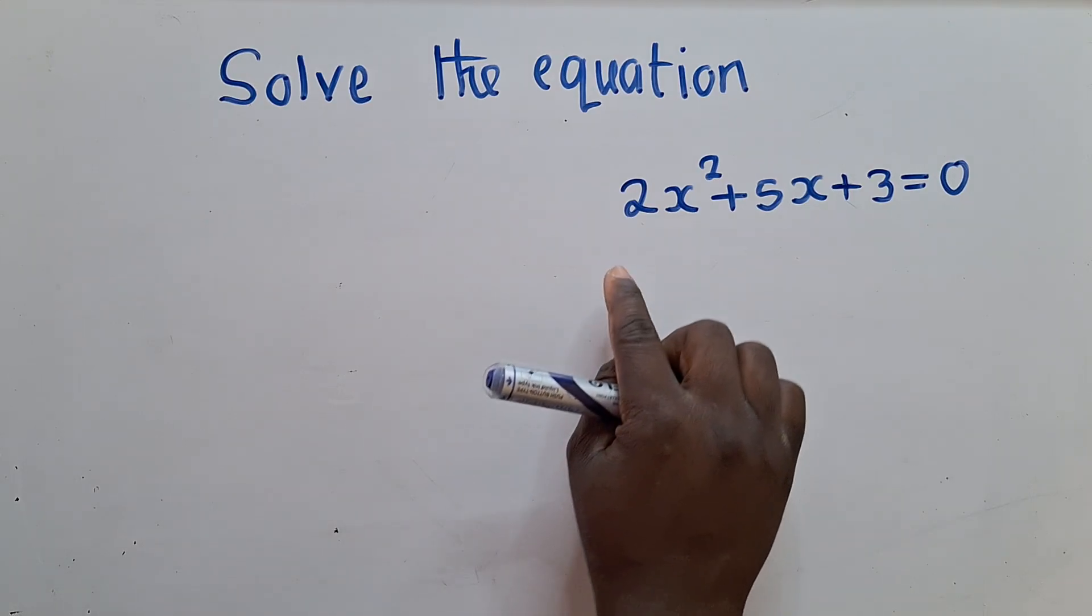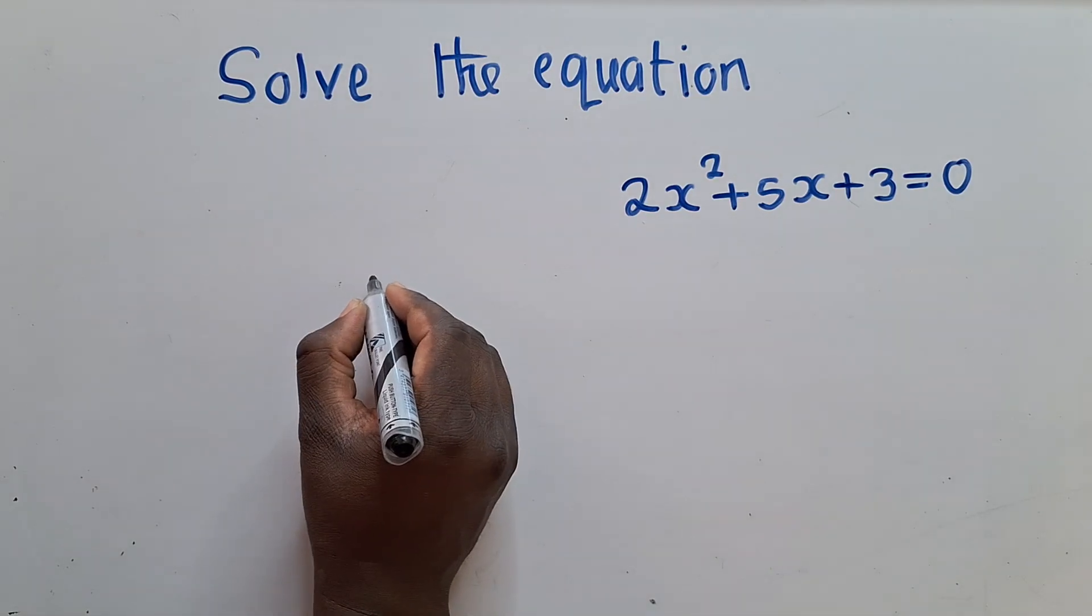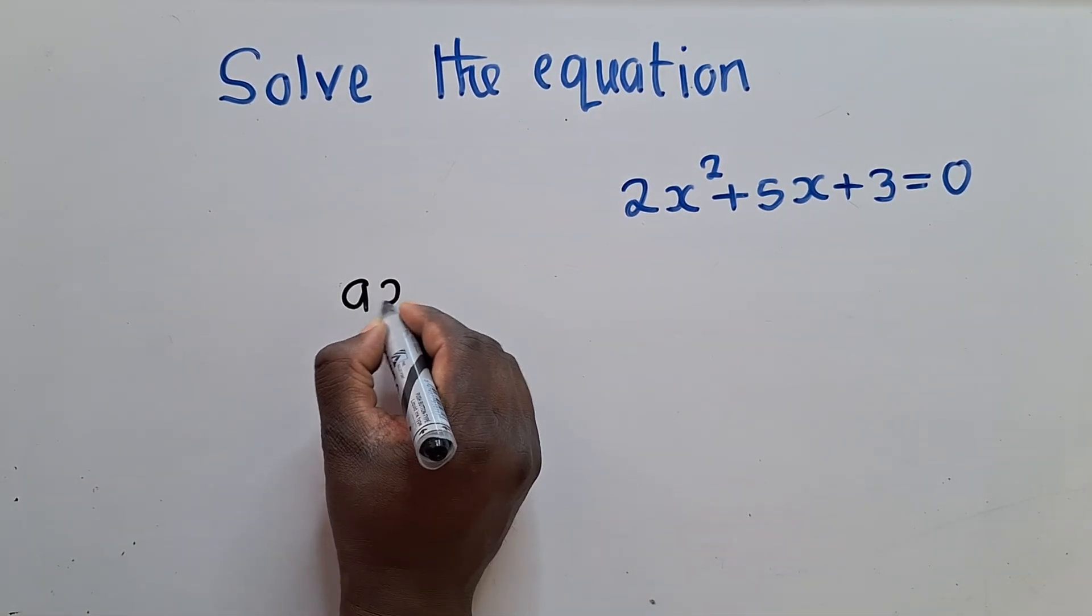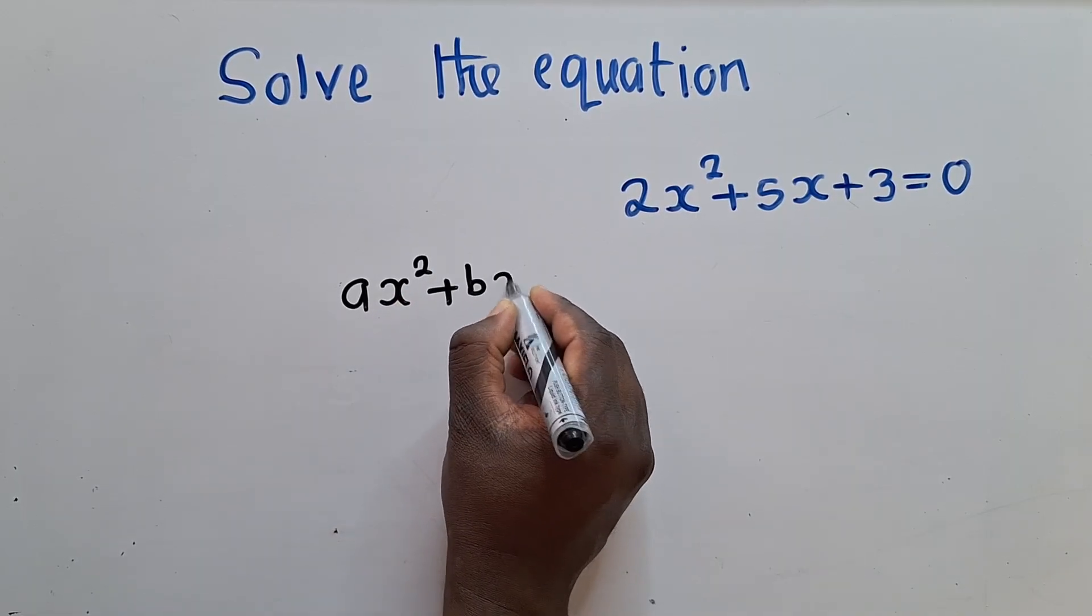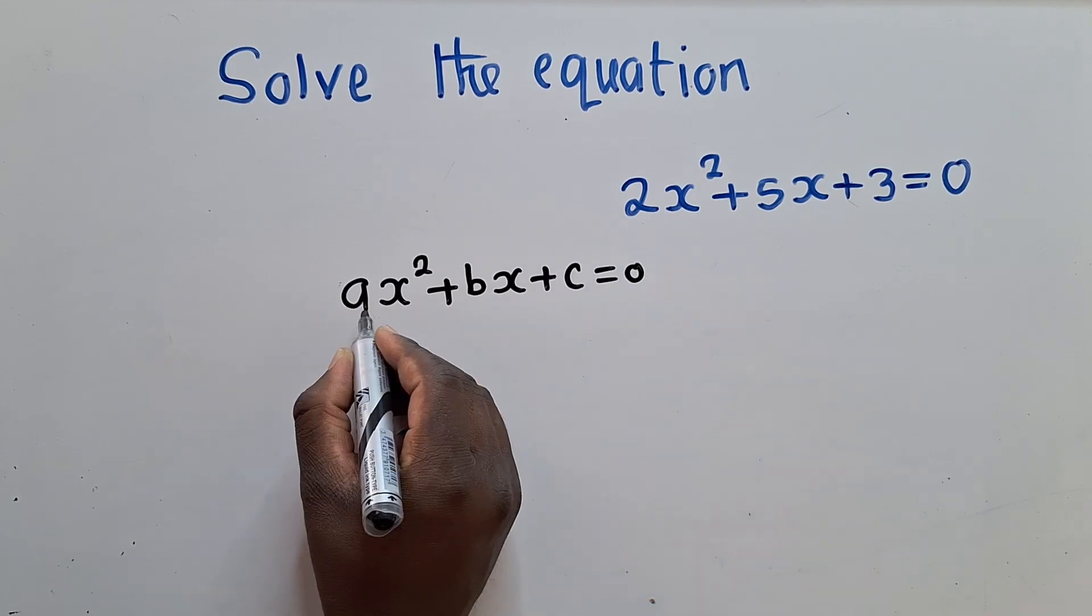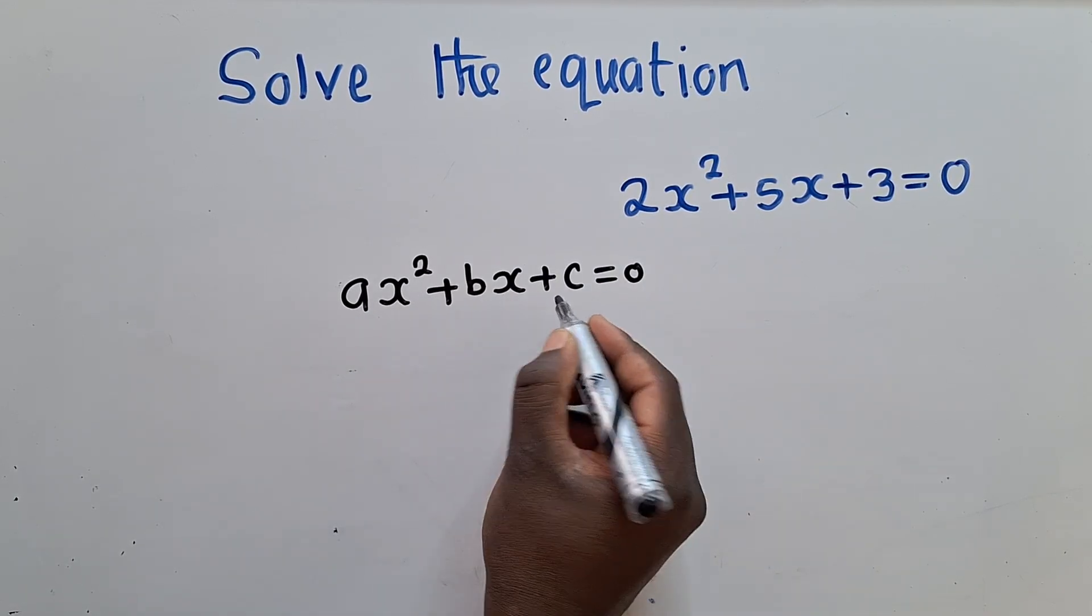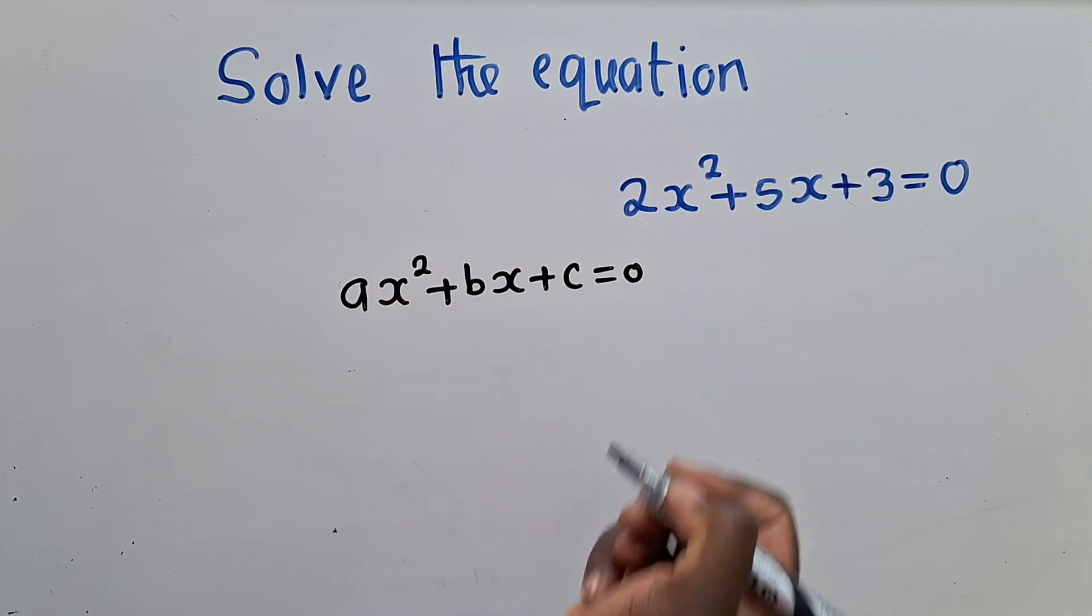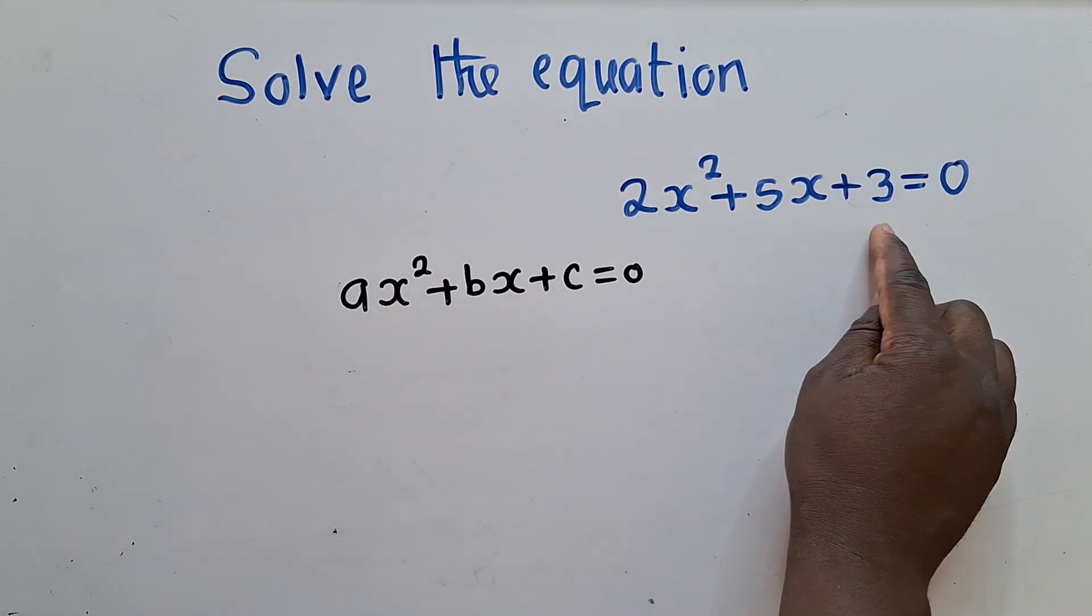So to solve the quadratic equation by the method called factorization, you have to understand. So let me just start with this. I just give you an idea of one or two things. So here, this is Ax² plus Bx plus C equals 0. So if you can see nicely, the way it looks, it looks like this.